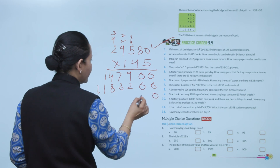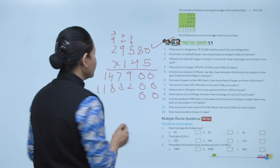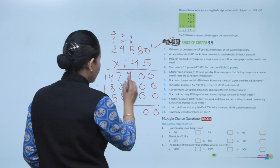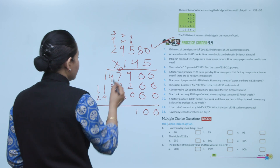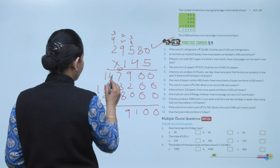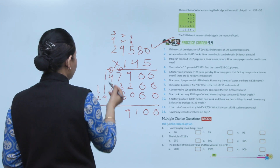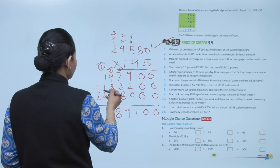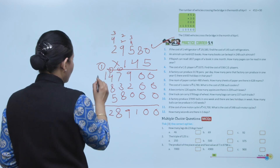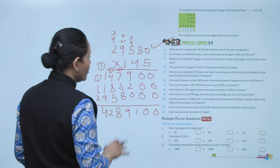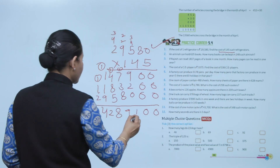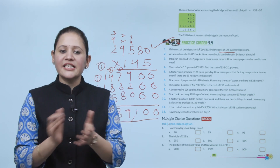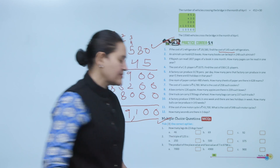Working through the multiplication: we place the appropriate zeros for each row of partial products, then add them all together — 1 plus 3 is 4, carrying through each column — to get the final answer: 145 refrigerators will cost 42,89,100 rupees. Practice all the questions of this exercise.